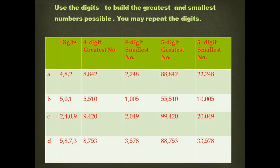Part B: the digits are 5, 0, 1. The greatest four-digit number will be 5,510 and the smallest four-digit number would be 1,005. The greatest five-digit number will be 55,510 and the smallest five-digit number will be 10,005.